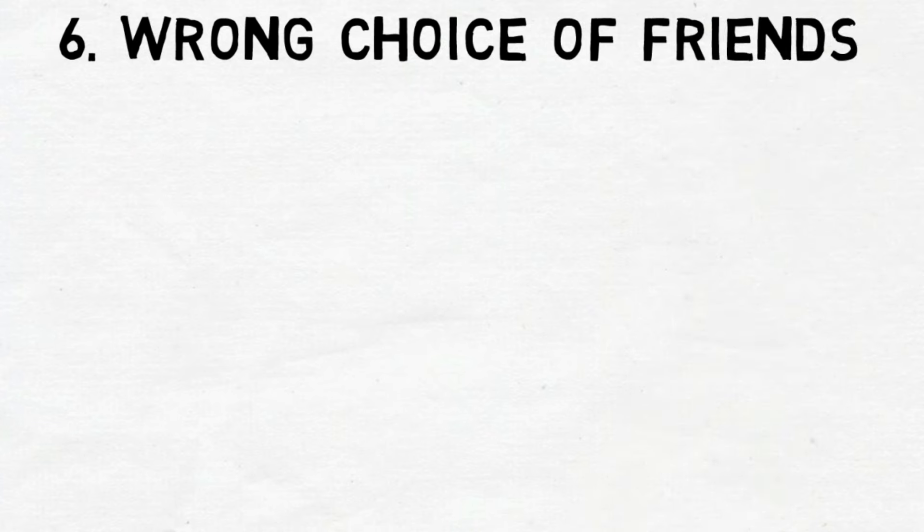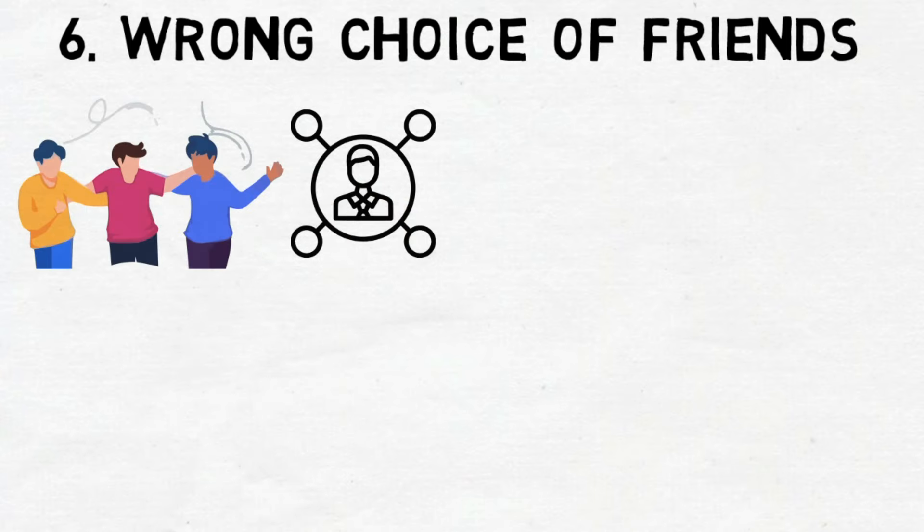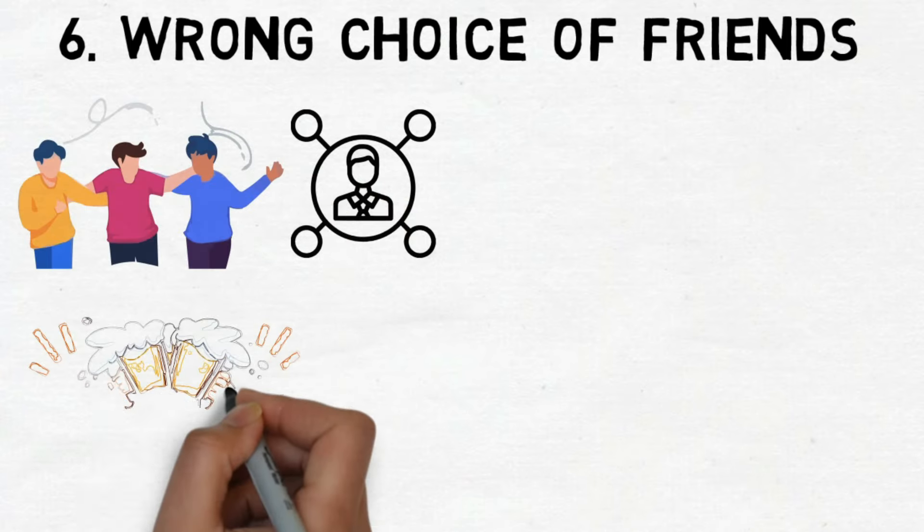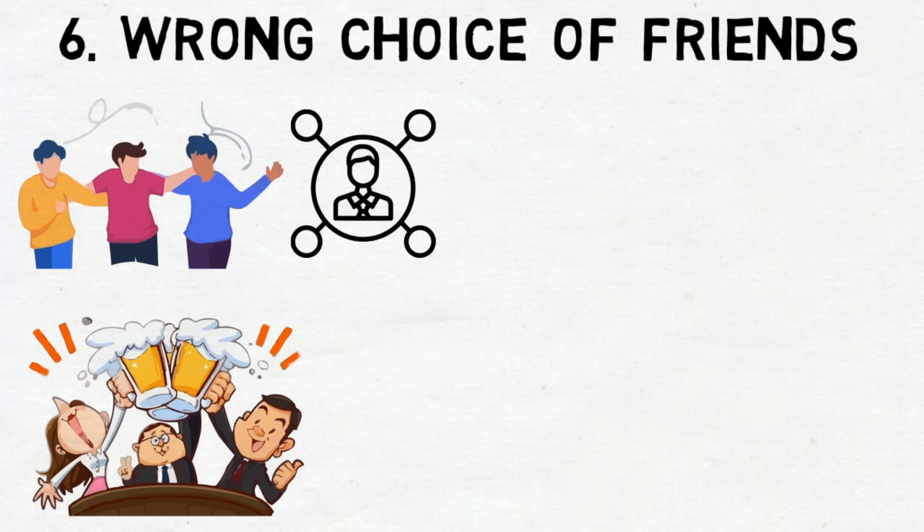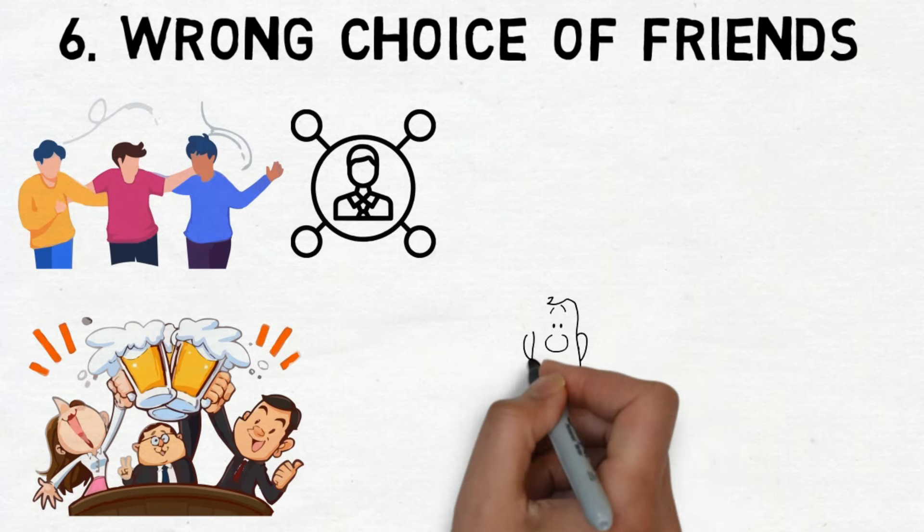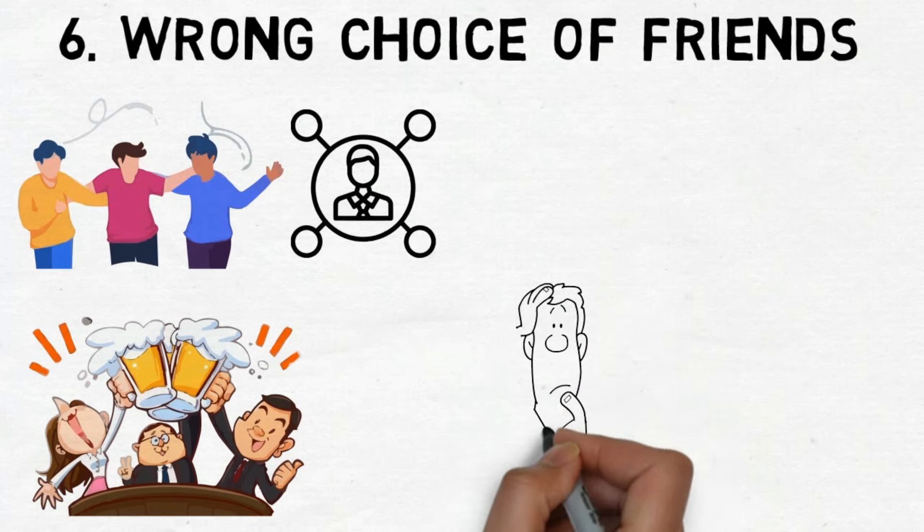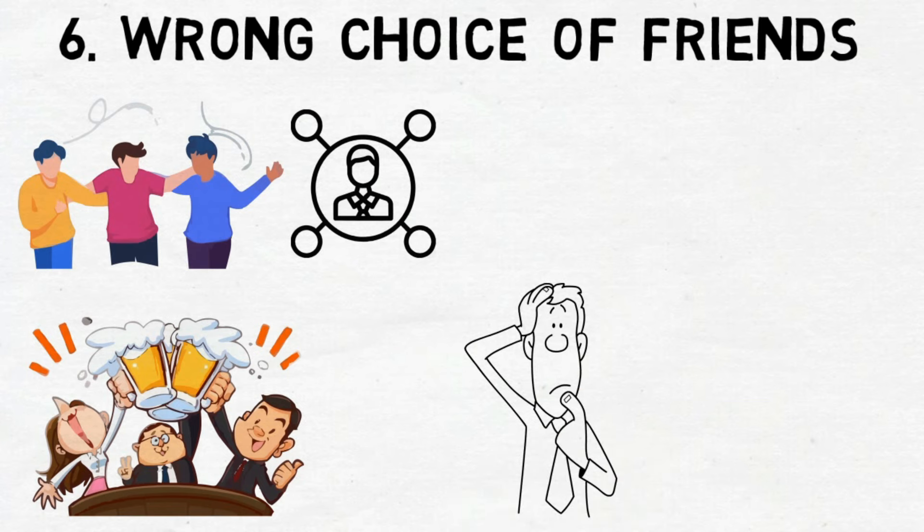Number 6. Wrong Choice of Friends. Consider the composition of your social circle. Who do you often hang out with in your free time? Are they inclined towards excessive drinking and partying? If your companions align with these behaviors, your prospects for financial success are likely diminished.